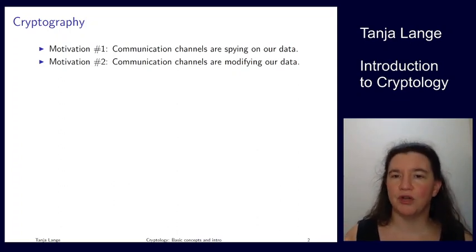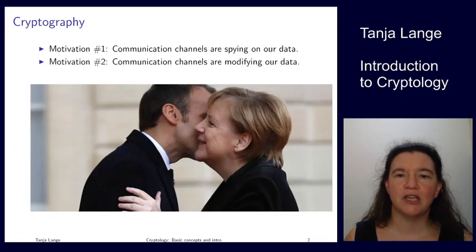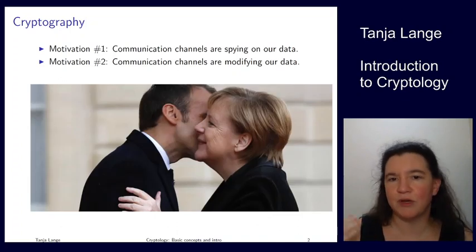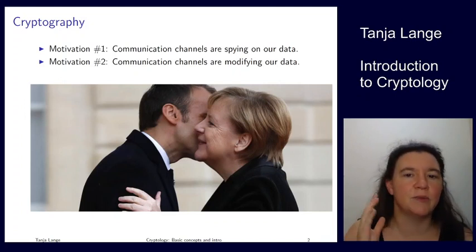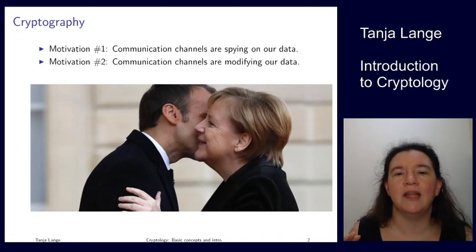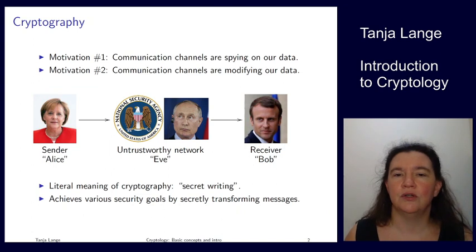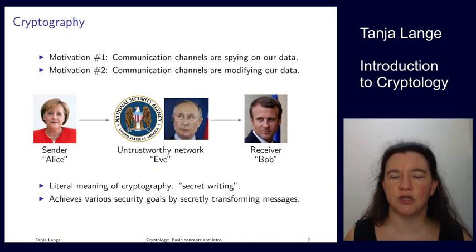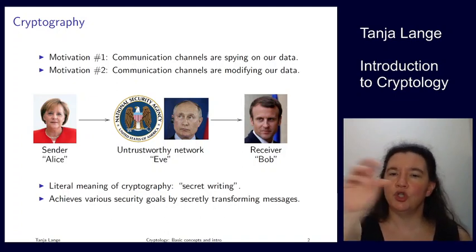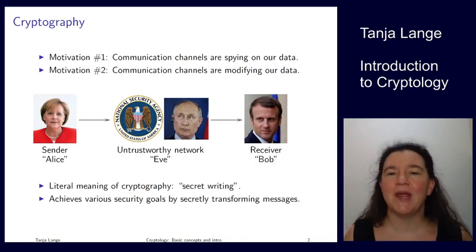Others are also trying to modify our data. Now depending on what communication channel you have available — if you can whisper into the ear of somebody you might not be so worried. You might be worried about listening devices, but you get a little closer and you know you're talking to the right person. But the normal situation is that Alice as a sender and Bob as a receiver are communicating by an untrusted network, so they have to send information from Alice to Bob and probably also from Bob to Alice.